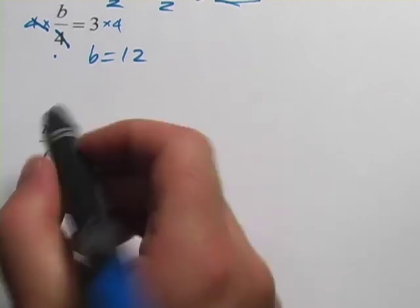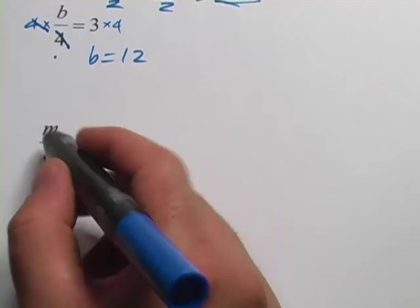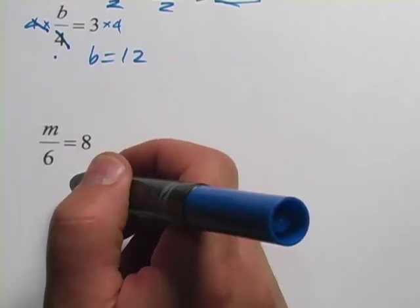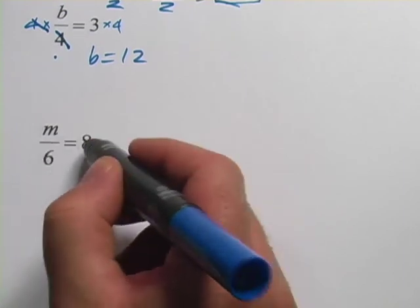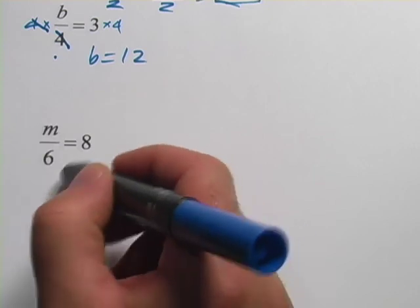Let's try one more like that. We've got m divided by 6 equals 8. So what divided by 6 equals 8? If you know your multiplication facts really well, you might come up with 48 because 6 times 8 is 48, so 48 divided by 6 is 8.